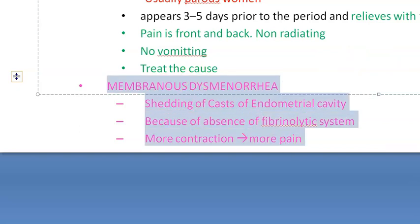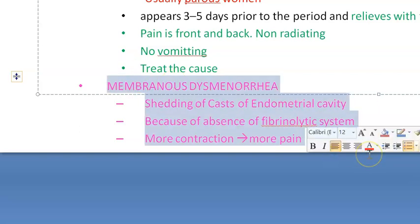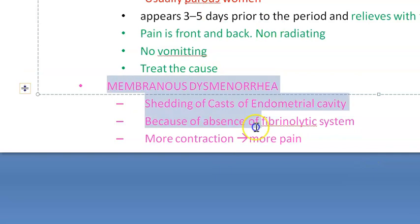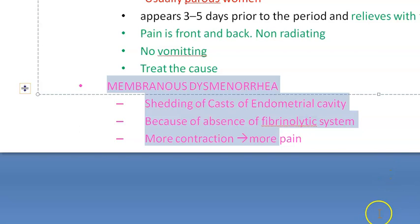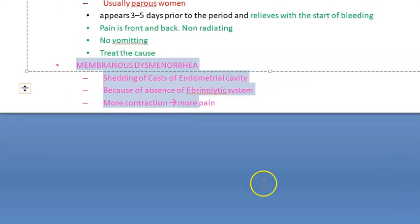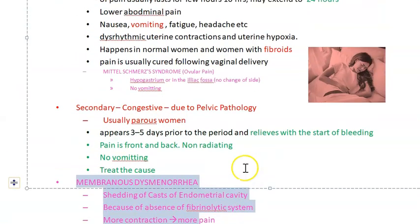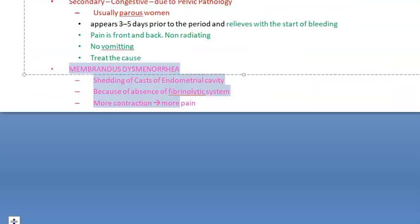Membranous dysmenorrhea seems to occur during the menstruation days, so it is difficult to fit it neatly into either primary or secondary classification.